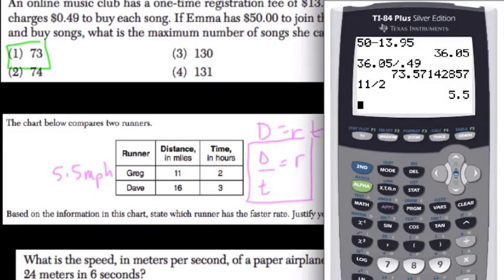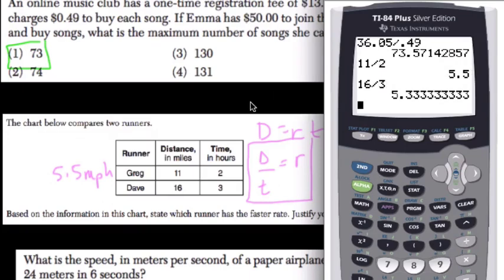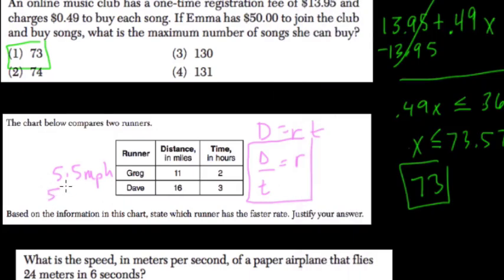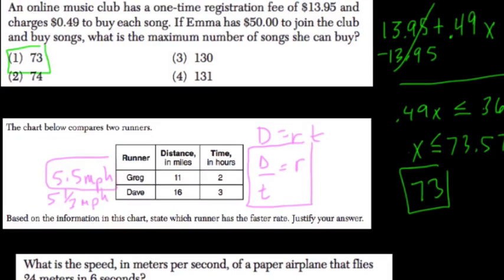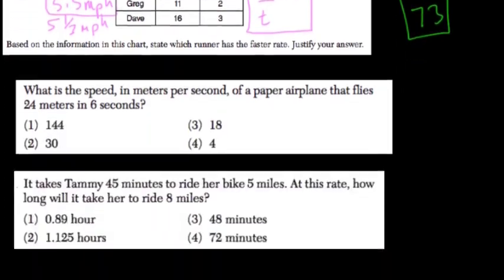Dave is 16 divided by 3, which is certainly going to be a little bit smaller — 5.3 repeating miles per hour. So Greg has a higher rate. You can justify that by showing your work.